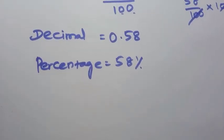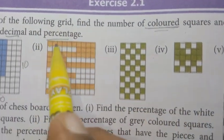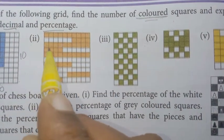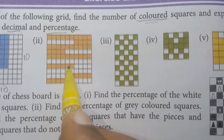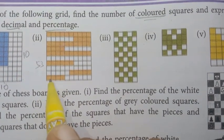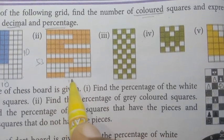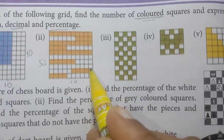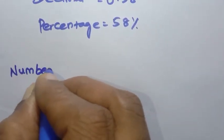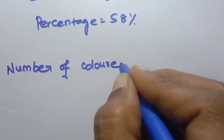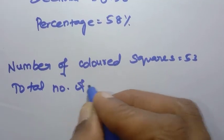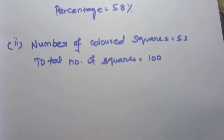Second grid: counting the orange-colored shaded squares. Counting across rows: 10 full, then 20, 30, 31 through 53. Vertically: 10 columns, 3 rows plus additional giving 53. Total number of squares is 100. Number of colored squares is 53.